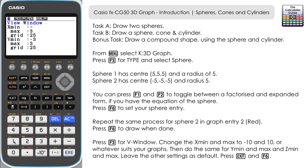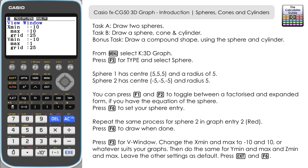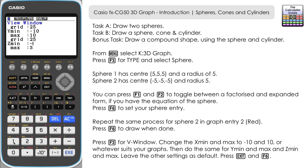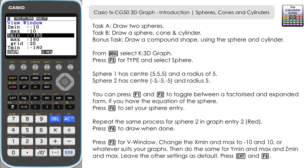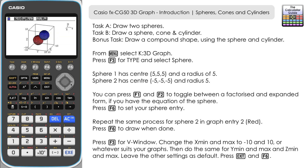Press F3 to open the view window. I'm going to change all three dimensions to negative 10 and positive 10. So for x: negative 10 to 10, leave grid as 25; y: negative 10 to 10; z: negative 10 to 10. Ignore s min and max — those are for polar coordinates, so leave them as default. Press exit and then draw again. It takes a little more time this time.